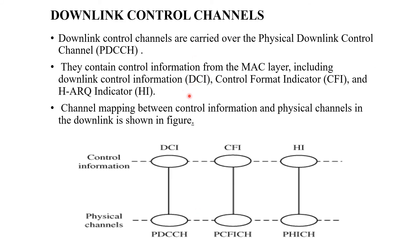Downlink control channels are carried over the Physical Downlink Control Channel (PDCCH). They contain control information from the MAC layer including DCI, CFI, and HI. DCI means Downlink Control Information; CFI is Control Format Indicator; HI is HARQ Indicator.